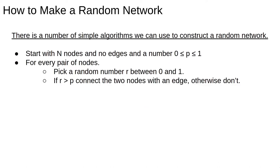There are a number of algorithms for making a random network. The simplest one is as follows. Start with n nodes and no edges. Pick a number p between 0 and 1. This number p will control how many edges we end up having in our final network.